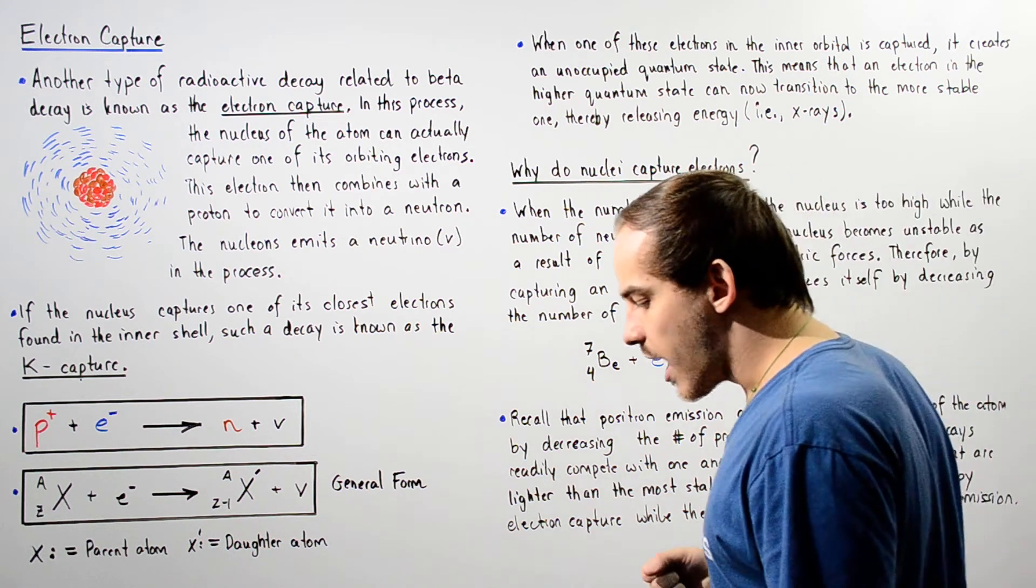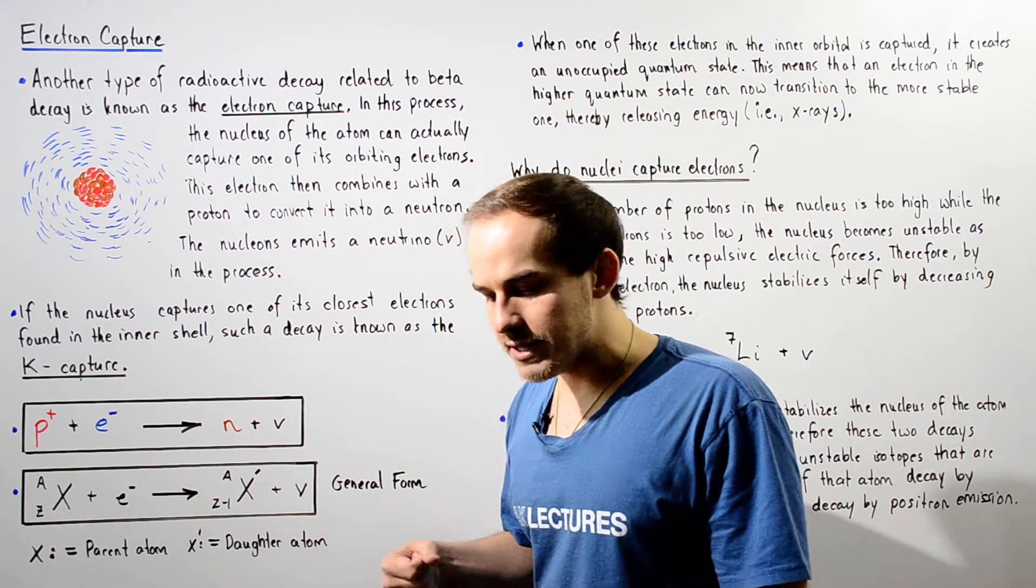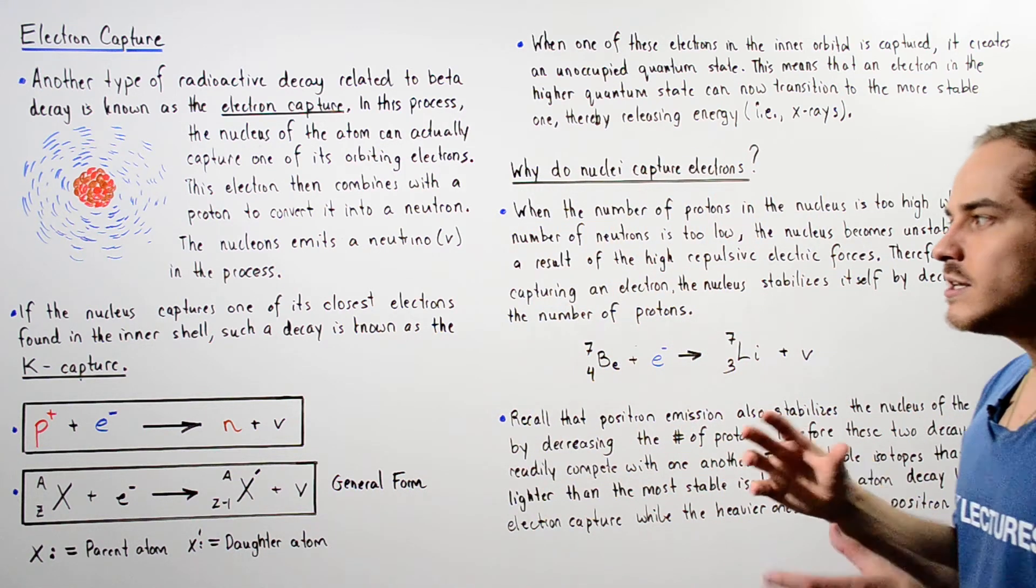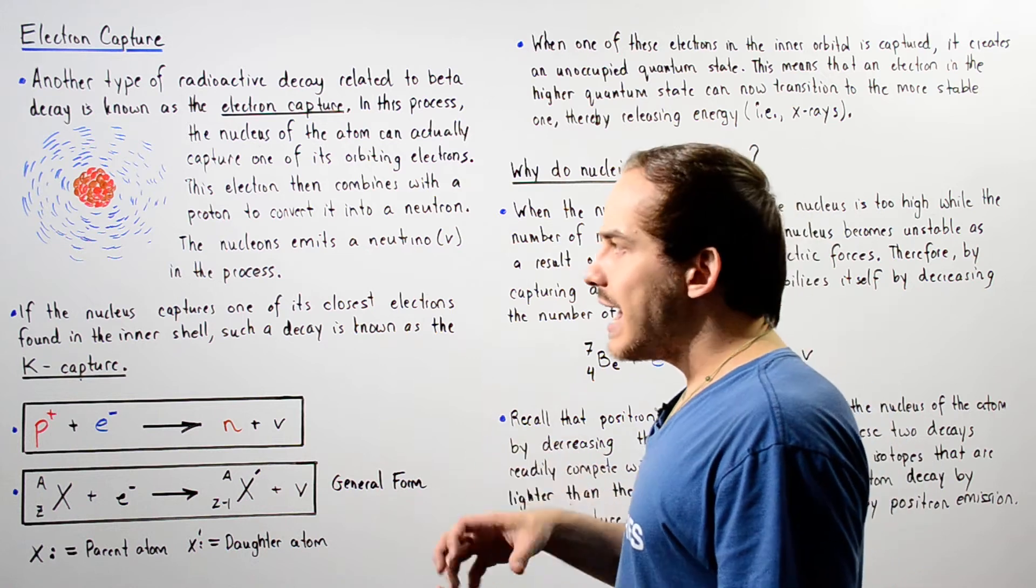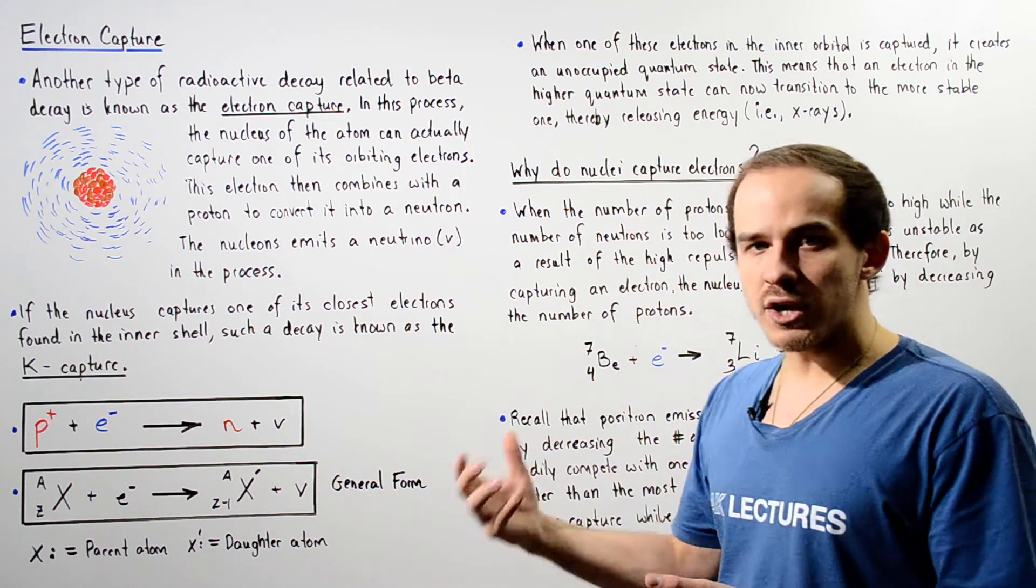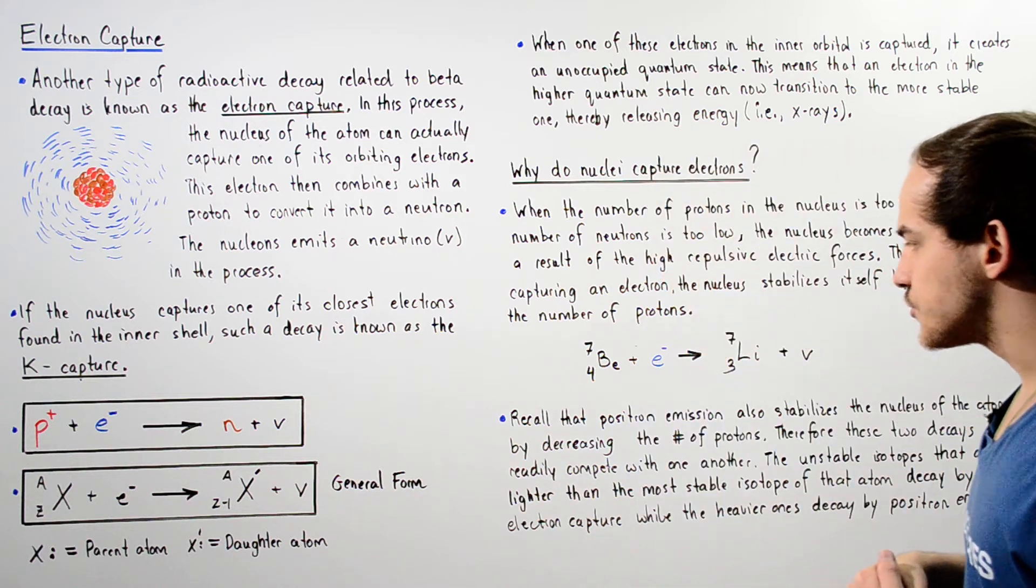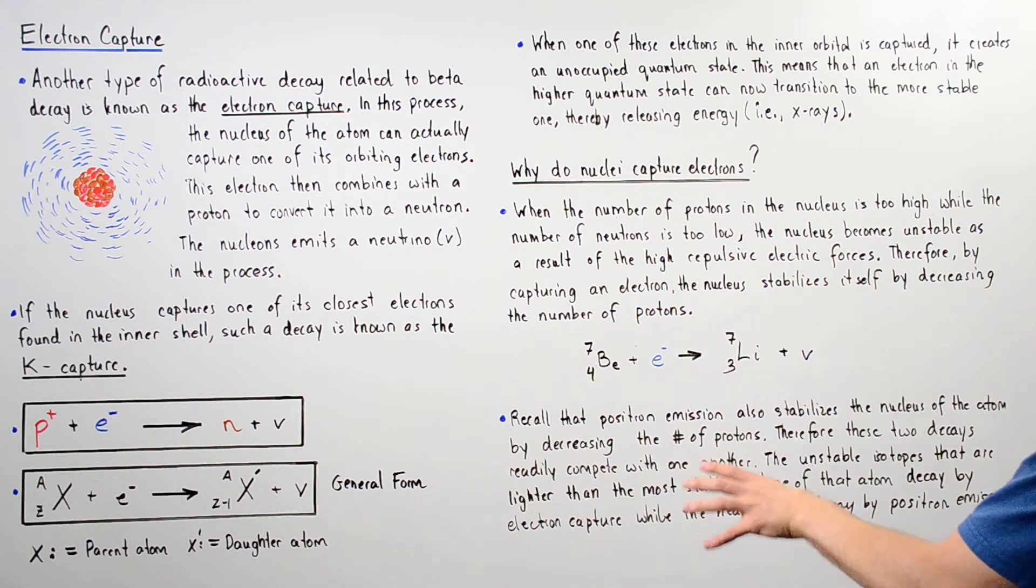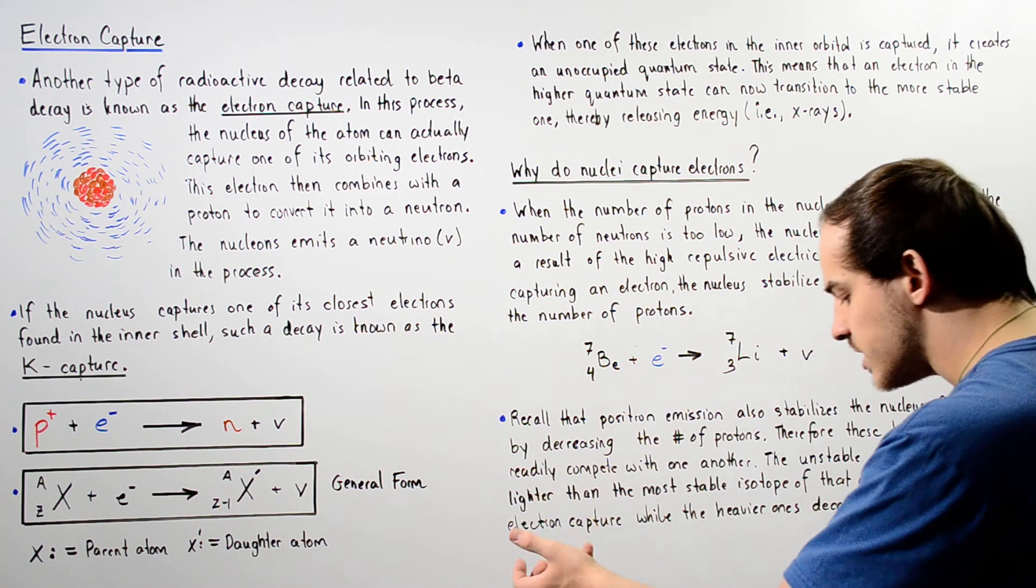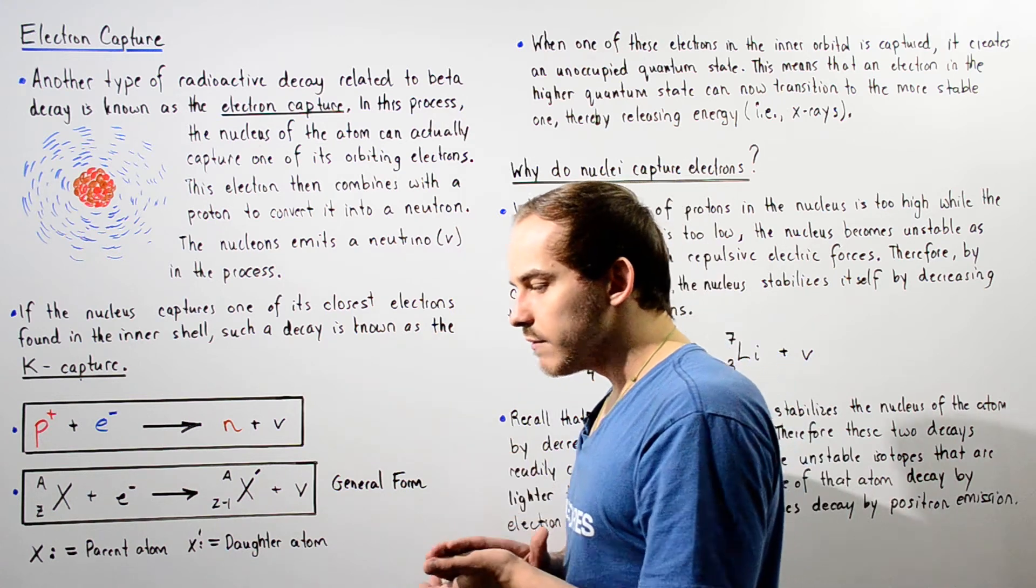Now recall in our discussion on the positron emission, the positron emission basically does a similar thing in the sense that it also tends to decrease the number of protons and increase the number of neutrons. Now recall that the positron emission also stabilizes the nucleus of the atom by decreasing the number of protons and increasing the number of neutrons.